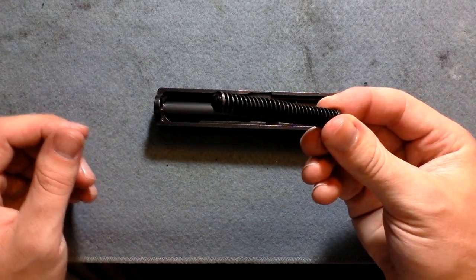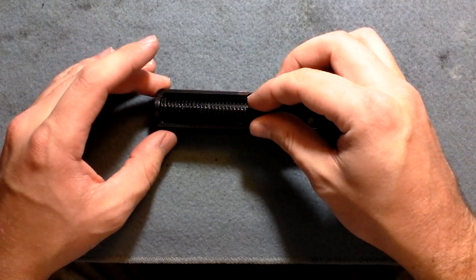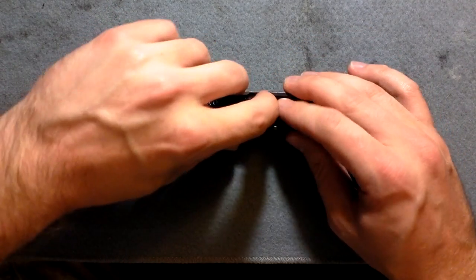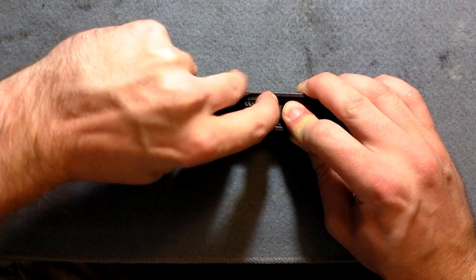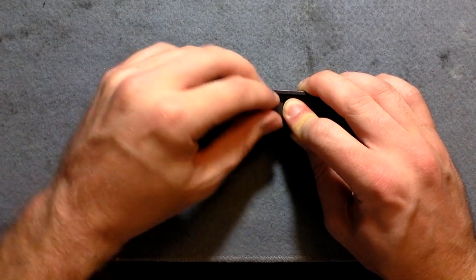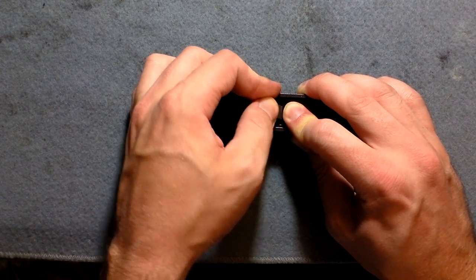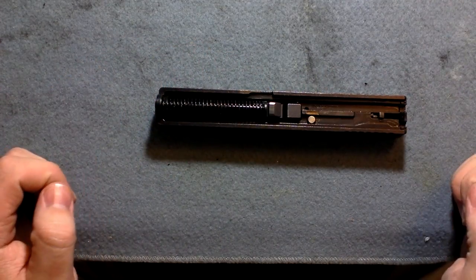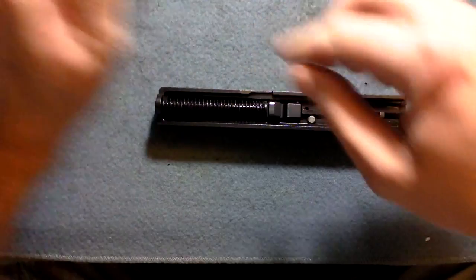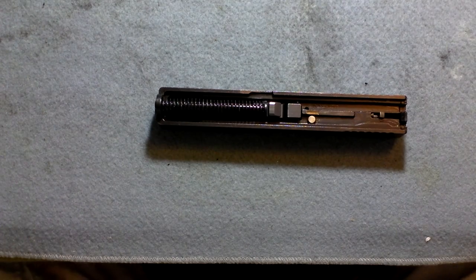You want to take the recoil spring, with the rounded part forward, and it's going to sit right on this ledge here. So you push it forward, and down. And it's going to sit in there. Make sure it's in there and recessed, or it's not going to work properly.